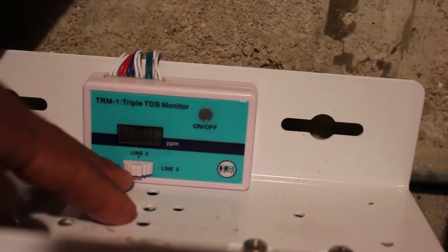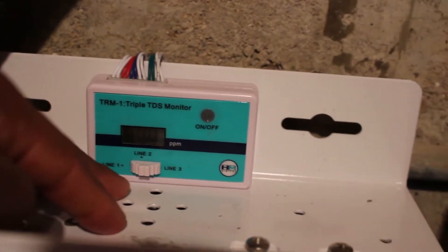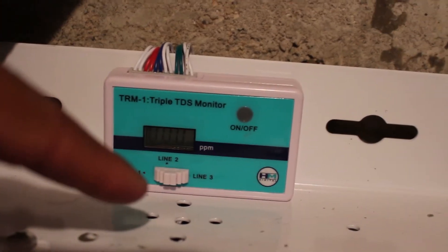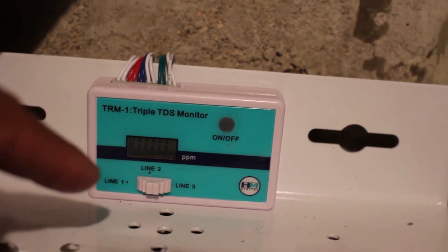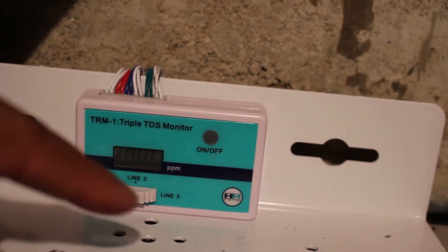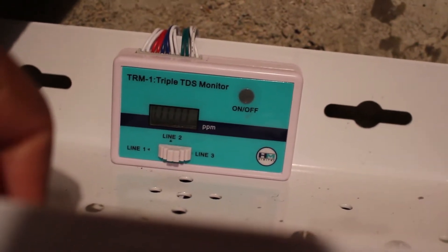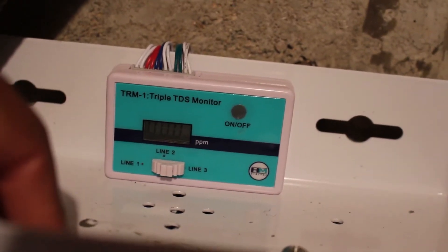Line 2 is already at zero. That's good. Line 3, you want the numbers to be at zero always. Line 3. That's the last stage where your clean water is coming out right now, putting clean water in your reef.